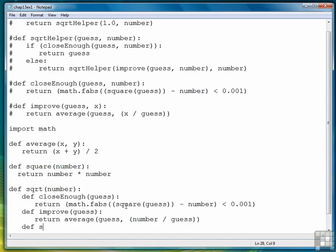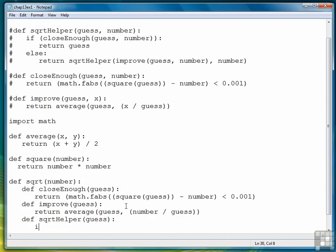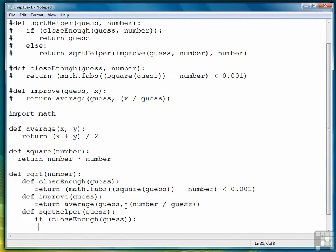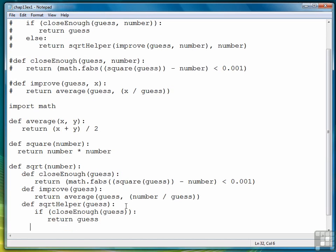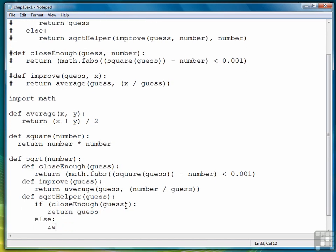Finally, we define square root helper, also with just one parameter. We'll finish up the definition right here. If the guess is not good enough, we recursively call square root helper with an improved guess.